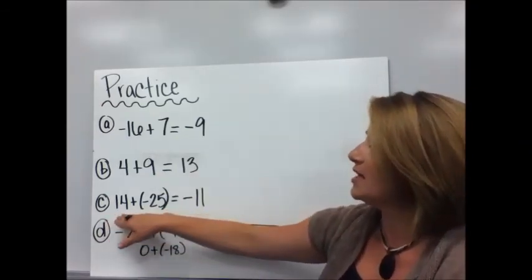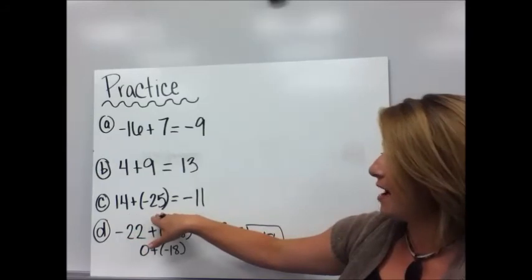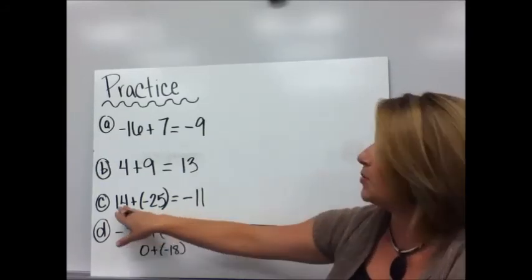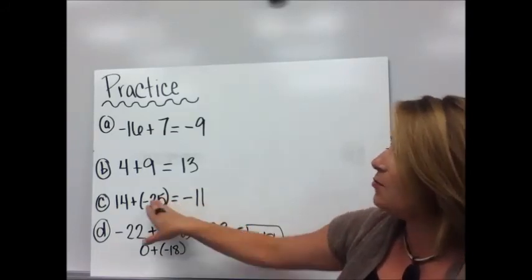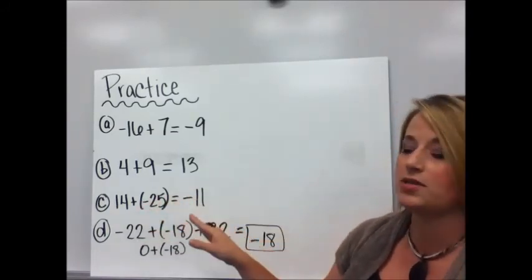Practice C. Fourteen plus negative twenty-five. They have different signs. The difference between fourteen and twenty-five is eleven. And with the sign more is the negative win, so my answer is negative eleven.